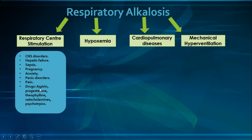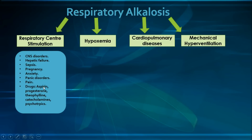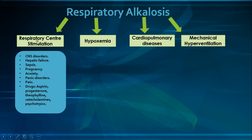The first drug is aspirin, which causes respiratory alkalosis primarily in adults due to direct stimulation of the respiratory center. It's also important to note that aspirin later in phase 3 also causes a high anion gap metabolic acidosis through uncoupling of oxidative phosphorylation and inhibition of the Krebs cycle, both of which cause accumulation of organic acids, lactic acid, and ketoacids. Then we have progesterone, which also directly stimulates the respiratory center. And theophylline, which is thought to increase catecholamine release, thereby increasing beta-adrenergic activity and causing respiratory center stimulation. Catecholamines themselves also cause respiratory center stimulation.